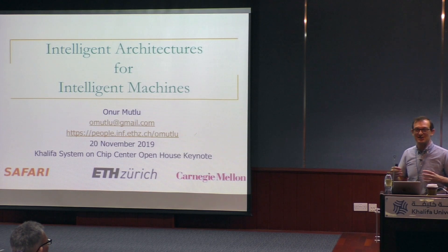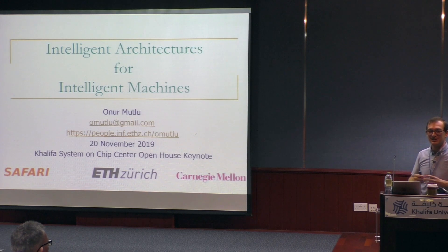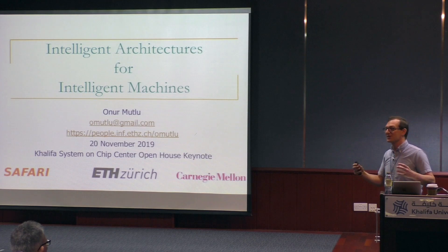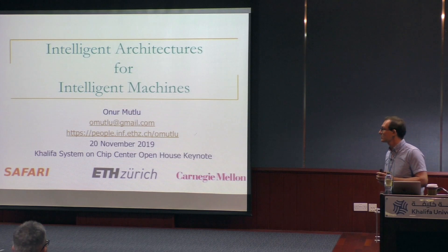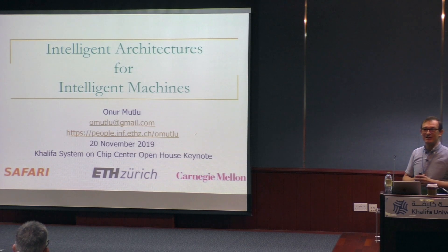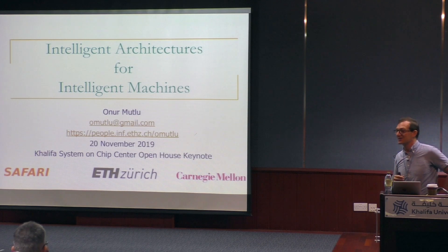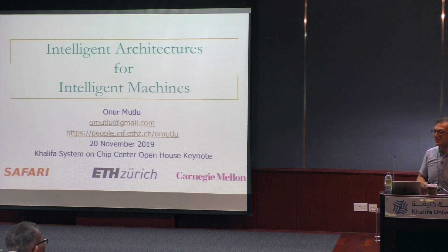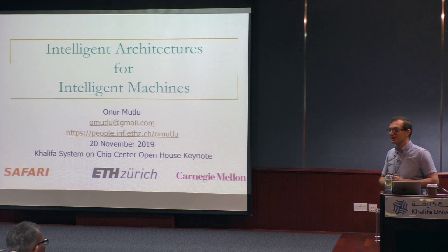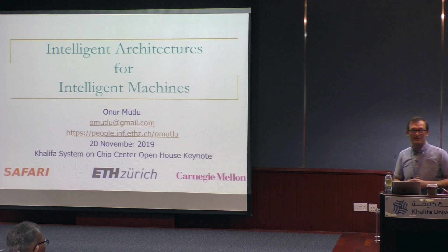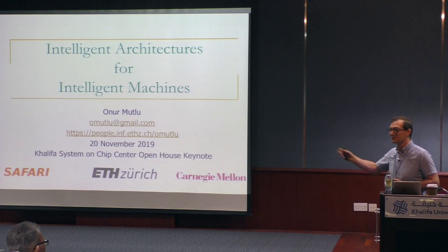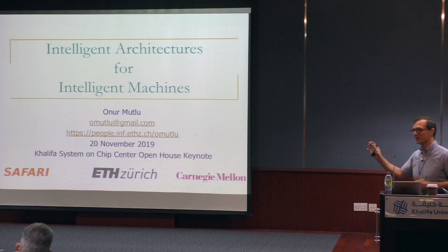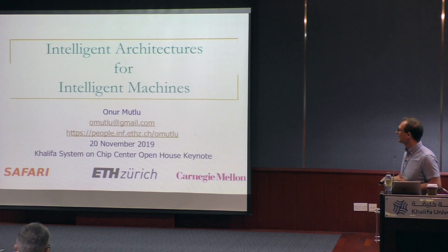We want intelligent architectures for intelligent machines. If we want to make the machines intelligent, we have to really make the architectures intelligent also. This talk is about how we are not designing architectures that are intelligent today, and where we can be if we rethink the design so that we can design more intelligent architectures for an intelligent future.